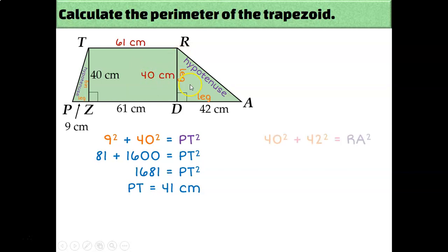So then I can do leg squared plus leg squared equals hypotenuse squared. So I get 3364 equals RA squared, square root both sides, and we find out that RA is 58 centimeters.